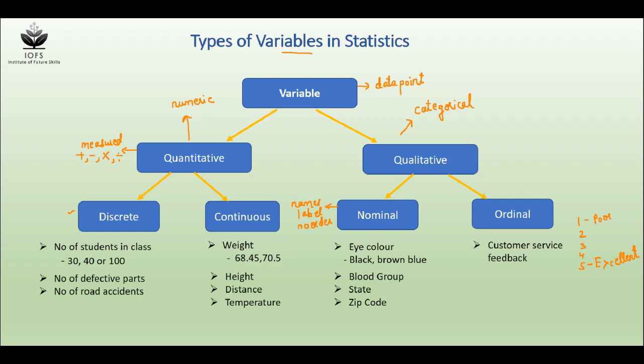Other examples would be ranks for students. So ordinal data have order.